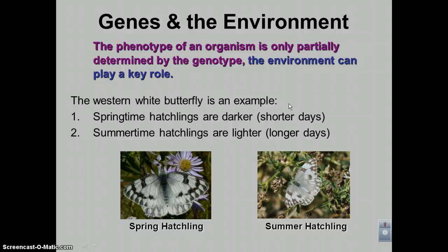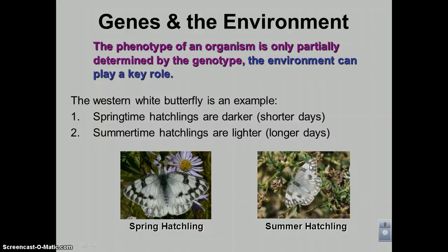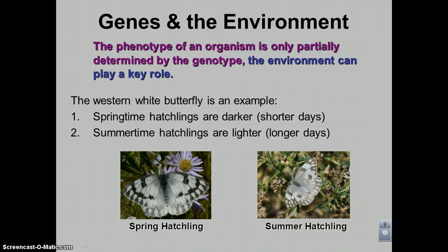How does the environment affect gene expression? Sometimes what food you eat, what the temperature is, and the living conditions for that organism can play a very important role in determining how that gene gets expressed. We see this in the western white butterfly. If it's born in the springtime when the temperature is cooler and the days are shorter, they're going to be darker — you can see more black. If the butterfly is hatched in the summertime when the days are longer, it's going to have a lighter, more brown color. So the genotype creates the patterns, but temperature and available light determine whether it's more brown or more black.